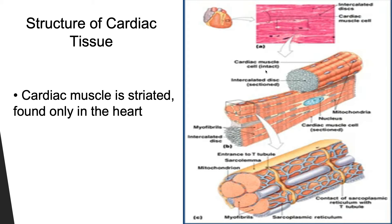Basically, a lever is a rigid bar — such as a crossbar or a bone — that moves on a fixed point called a fulcrum. When force is applied to it, the applied force or effort is used against resistance or a load. In the human body, joints act as the fulcrums, bones act as levers, and muscles provide the effort. Levers can provide mechanical advantage, in which the load is close to the fulcrum and the effort is applied far from the fulcrum, requiring minimal effort to move a large load — this is called a power lever.